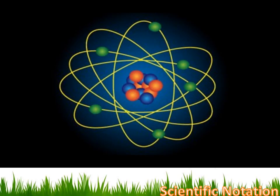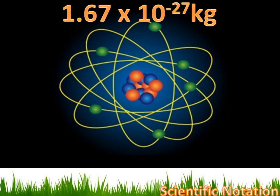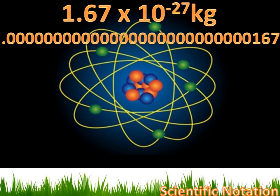Scientists also deal with some really small things like an atom. Some atoms have masses as small as 1.67 times 10 to the minus 27th kilograms. Now, if I wanted to convert that number to standard notation, I'd take this decimal point and I'd move it to the left 27 times. I move it to the left because I've got a negative number there and I want to make it smaller. So, I'm going to move it 27 times to the left and it'd look like that.